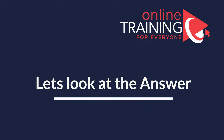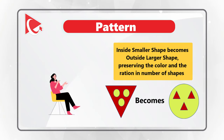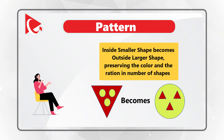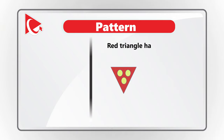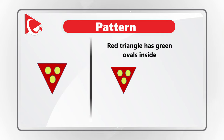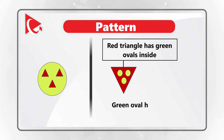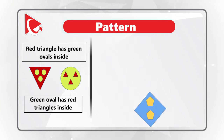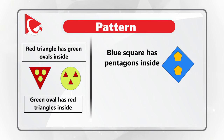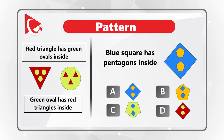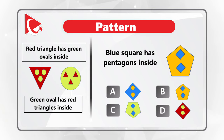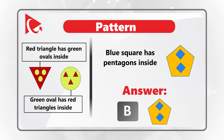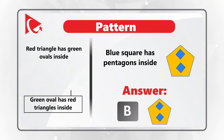To determine the correct answer, you need to look for patterns. The pattern here is that the inside shape becomes the outside shape, preserving the number of inside-to-outside shapes ratio. The red triangle has green ovals inside, and it has a relationship to a green oval that has red triangles inside. Knowing this, the blue square has pentagons inside — so you take the pentagon, enlarge it, and put blue squares inside. The correct answer is choice B.